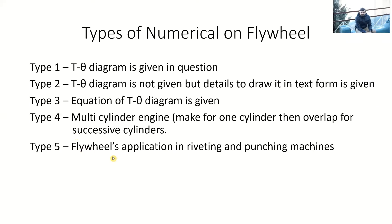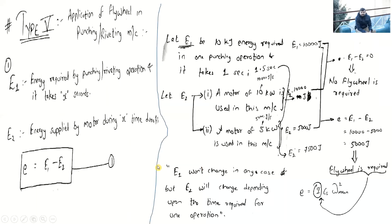In the previous class we started basics about Type 5 — the application of flywheel in punching and riveting machines. Let's quickly revise. E1 was the energy required by the punching or riveting operation for X seconds. The time parameter came into the picture when talking about punching and riveting machines because electricity consumption is significant. E2 was the energy supplied by the motor during the X time duration.